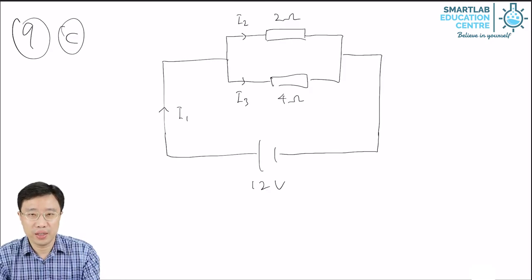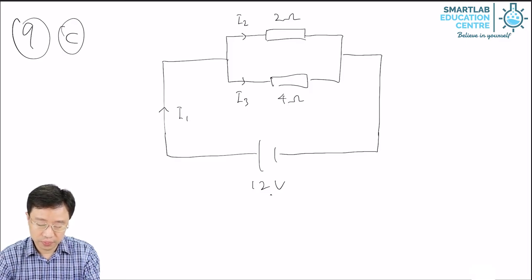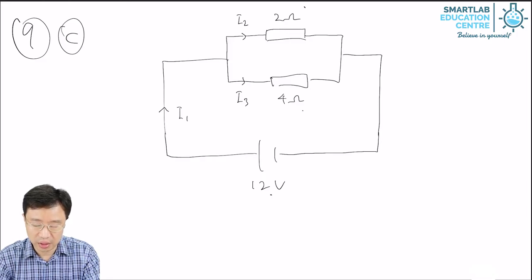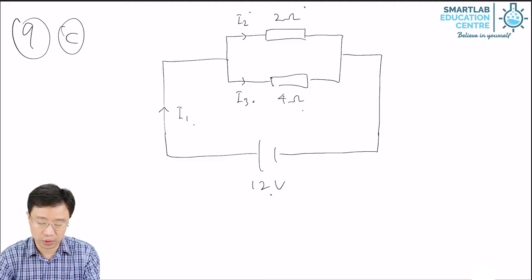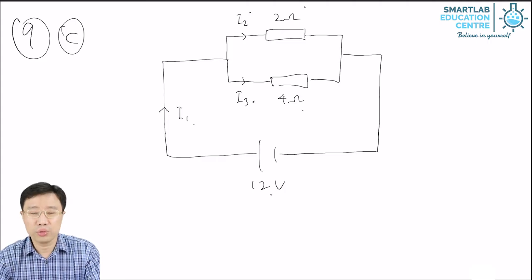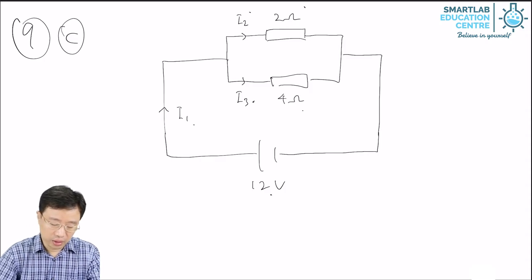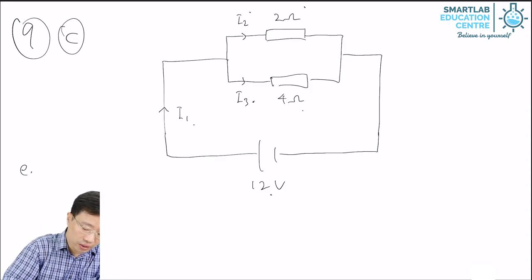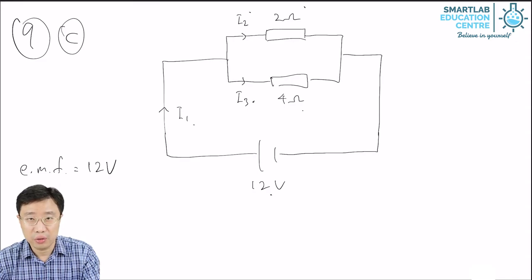Let's go on to the second example. In this example, we have a 12-volt electric cell, a 2-ohm resistor and a 4-ohm resistor in parallel, and we need to calculate the currents I1, I2, and I3. The EMF of the circuit is 12 volts, because the voltage of the electric cell, which is the source of electrical energy, is 12 volts.